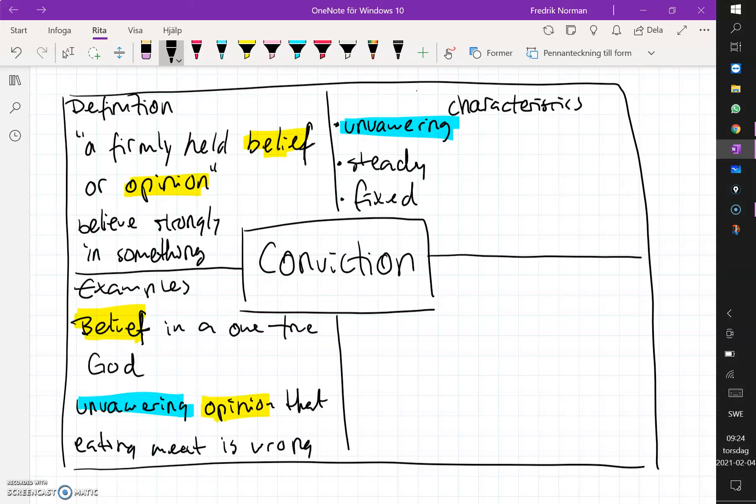Lastly, we cover the bottom right box, which has what's known as non-examples. And this might seem strange when beginning to use the Frayer model, but a non-example is meant to be the direct opposite of what conviction is. So it could be an antonym. In that case, an antonym of conviction could be uncertainty, for example.